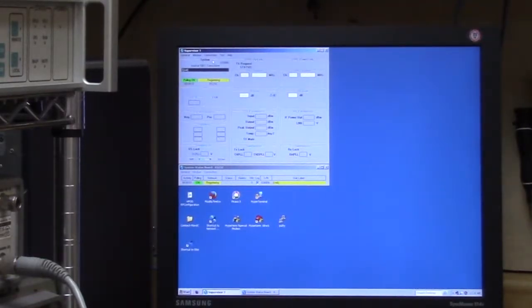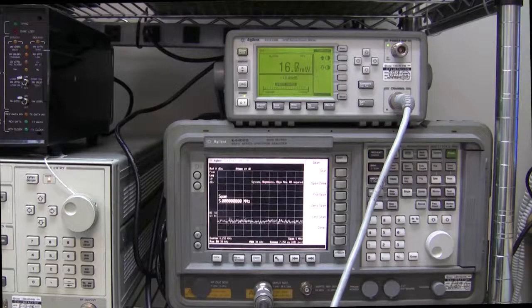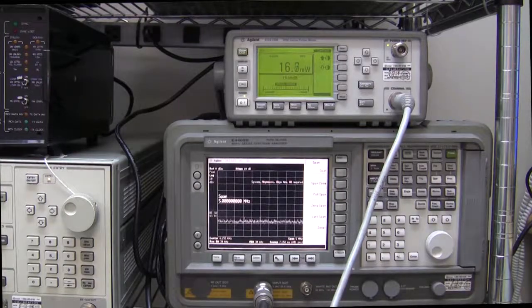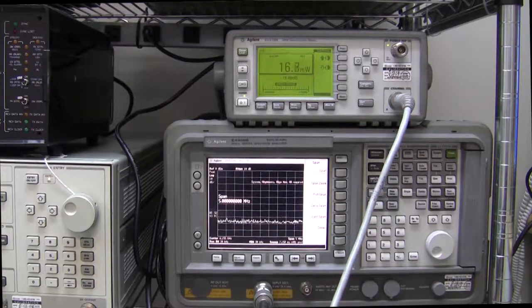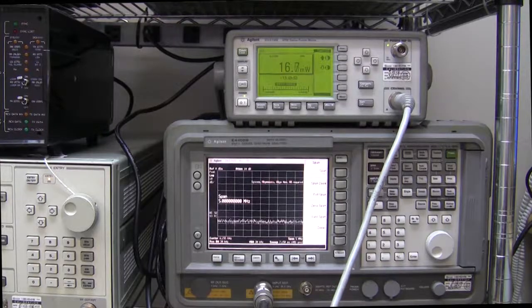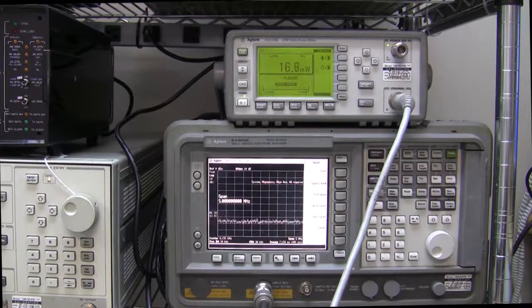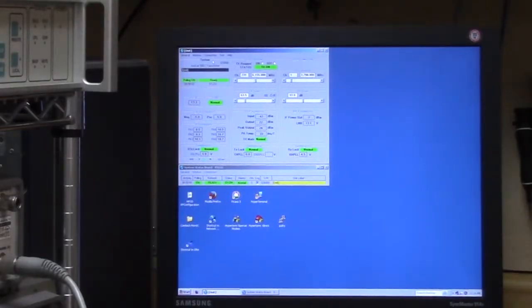Now at the same time you're looking at the Agilent power meter and the spectrum analyzer. There is no output. And at the moment that's because I don't have my modem set up in transmit mode. Okay so now we're looking back at the supervisor. We can see several things. The first thing down here we can see that all the power supplies are well within the correct frequency range. So no problems there.